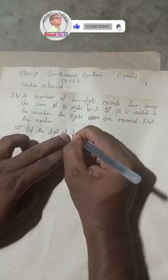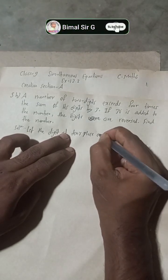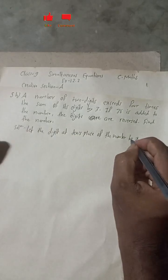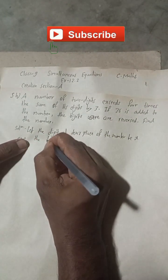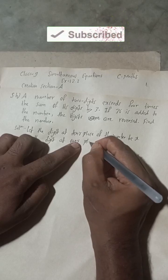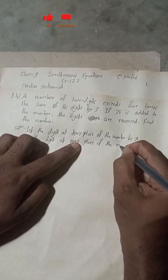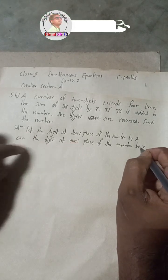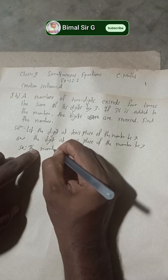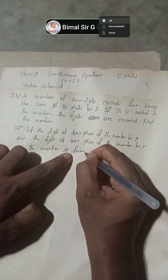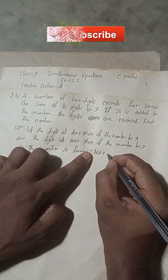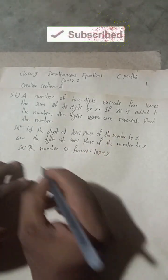Let the digit at the tens place of the number be x, and the digit at the ones place of the number be y. Therefore, the number so formed is 10x + y, since x is at the tens place giving 10x, and y is at the ones place giving y.